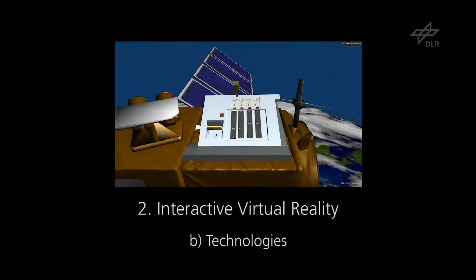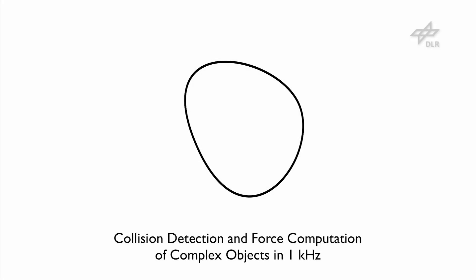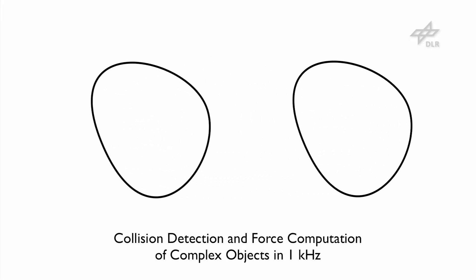A collision detection algorithm based on the voxel map point shell algorithm is used. The voxel map point shell algorithm is able to perform with one kilohertz update rate and works with two data structures.